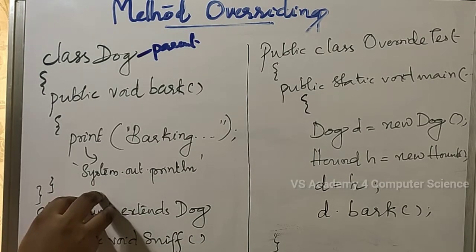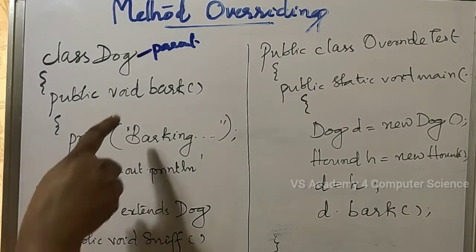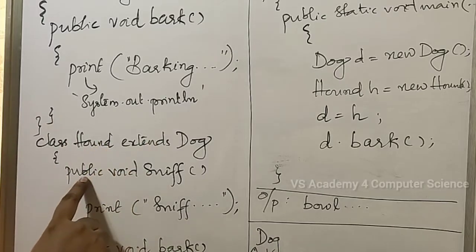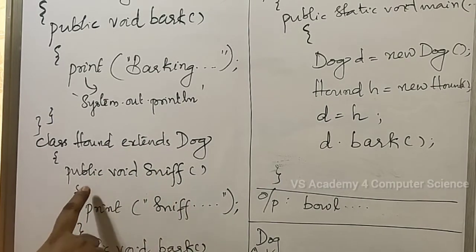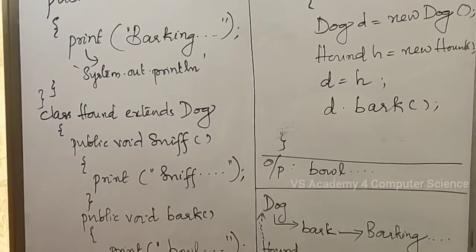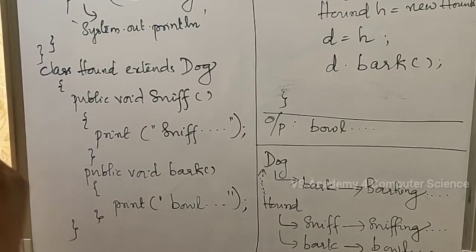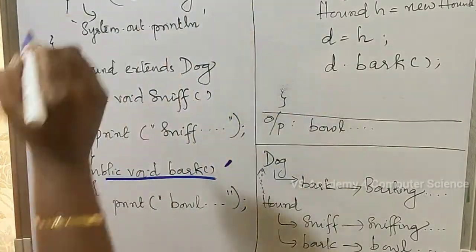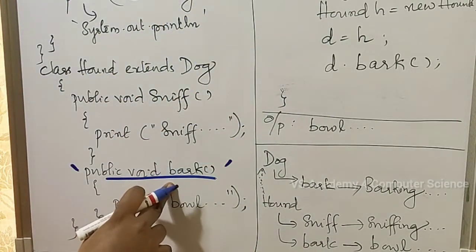The Hound class has its own method public void sniff, which prints a sniffing message. It also has a method public void bark — the same function name as in the parent class Dog, with the same parameters. These two bark functions are the same in name and parameters, but one is in the parent class and the other is in the child class.